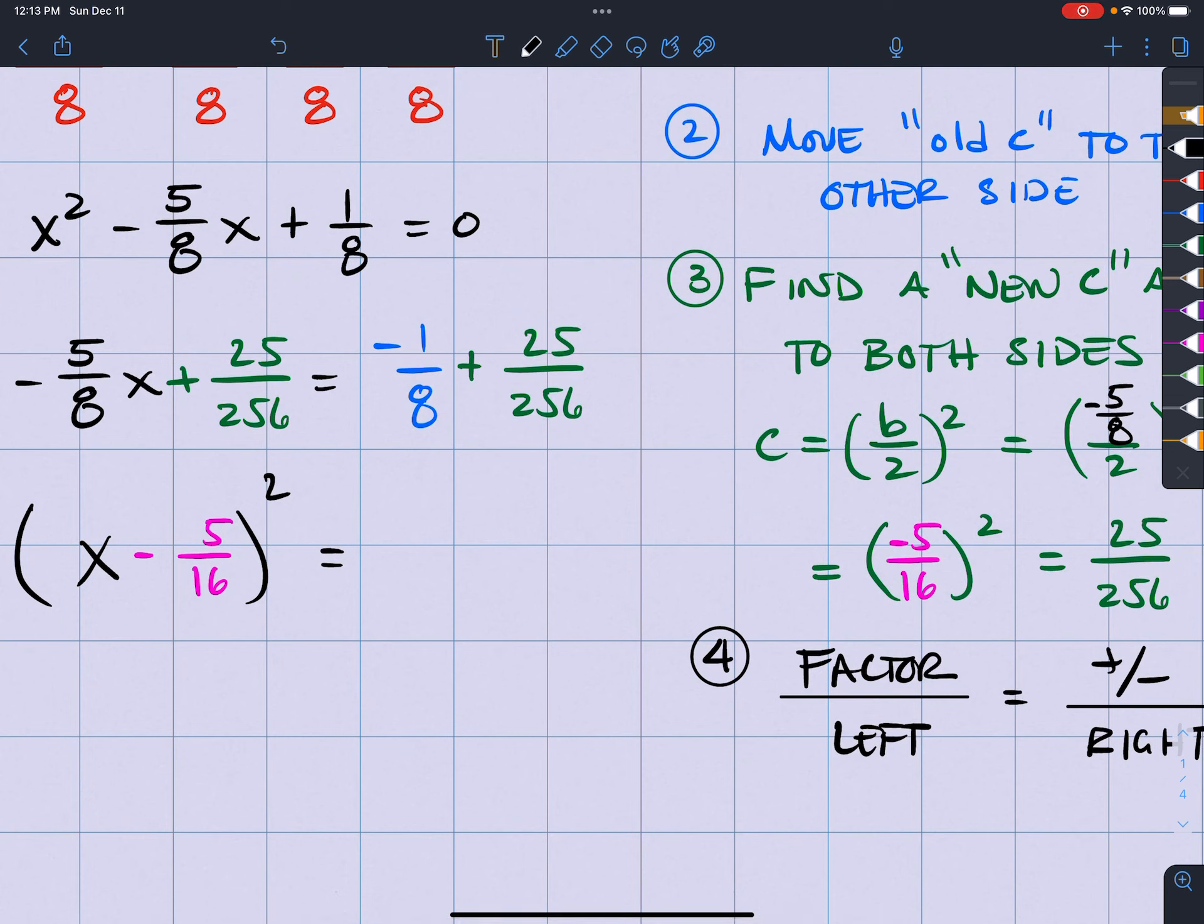So if I multiply 8 by 32, that means I got to multiply the top by 32. And if you were to check 8 times 32, you will get 256. Negative 1 times 32, you're going to get negative 32 plus the 25, which you're going to get negative 7 over 256.